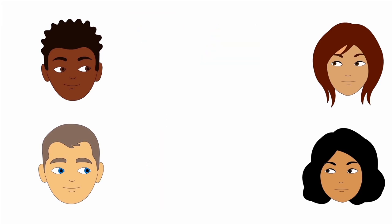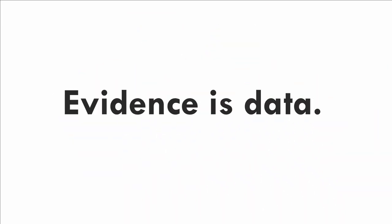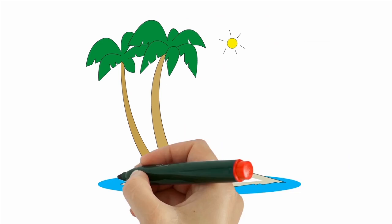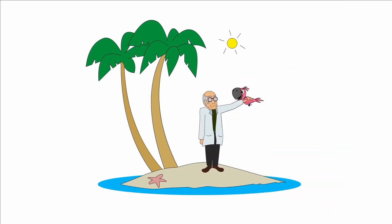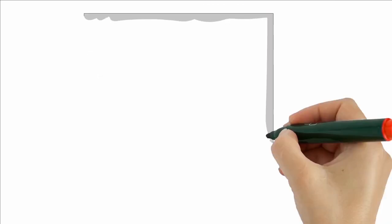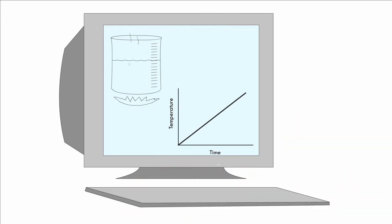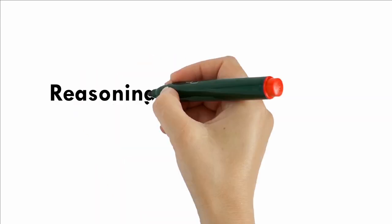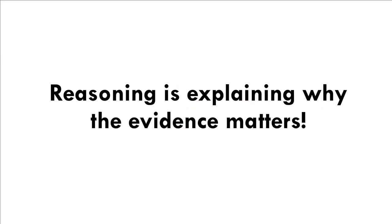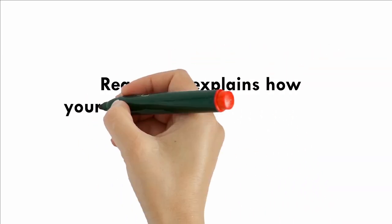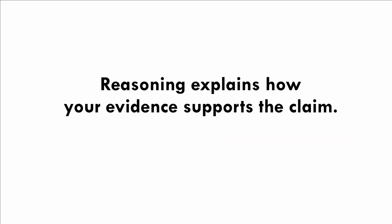Okay, let's think about evidence first. What is evidence? Evidence is data. Data comes from observations you can make in the real world or in a model. That's where reasoning comes in. Reasoning is explaining why evidence matters — it explains how your evidence supports the claim.